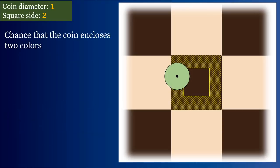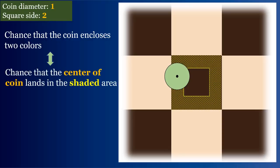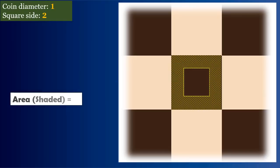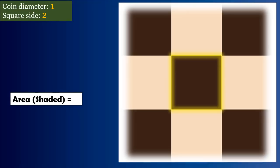Our task is to find out the chance of the coin enclosing two colors. And that means we have to calculate the probability that the center of the coin lands in the shaded area. And the shaded area is equal to the area of the main square minus the area of the inner square.